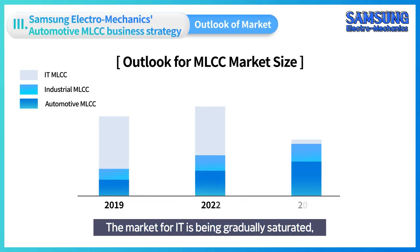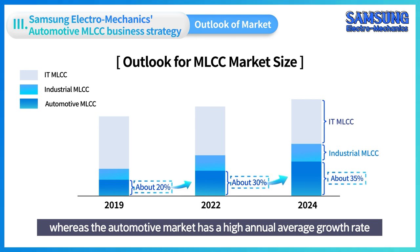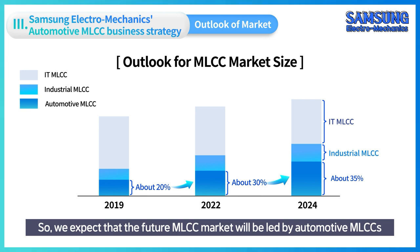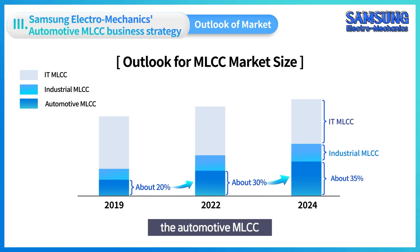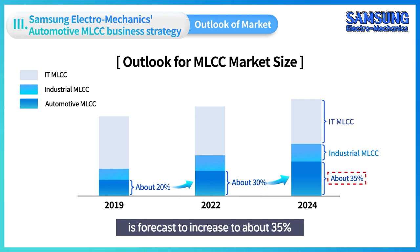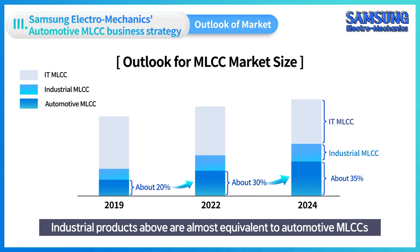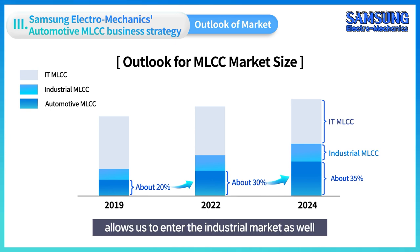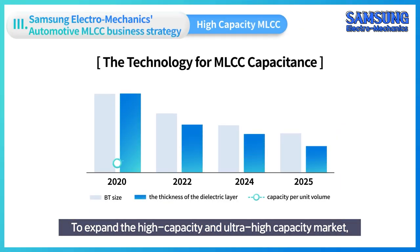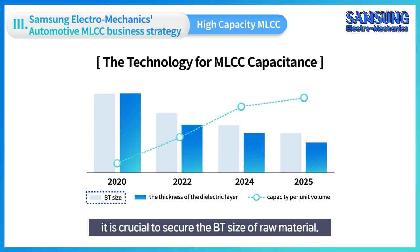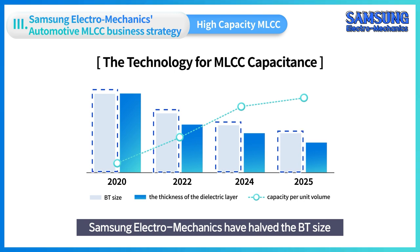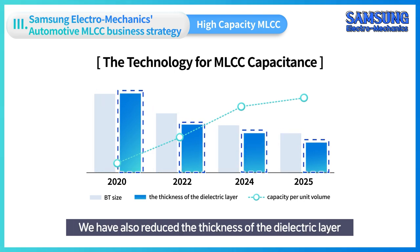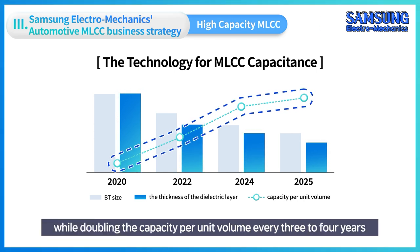The IT market is gradually saturating, whereas the automotive market has a high annual average growth rate and smaller price declines. The future MLCC market is expected to be led by automotive MLCCs. The automotive MLCC share is forecast to increase to about 35%, with industrial products nearly equivalent. To expand the high-capacity and ultra-high-capacity market, it is crucial to secure BT size of raw material, thickness of dielectric layers, and capacity per unit volume. Samsung Electromechanics has halved the BT size and dielectric layer thickness approximately every two years, while doubling capacity per unit volume every three to four years.